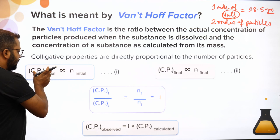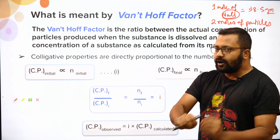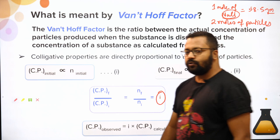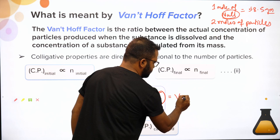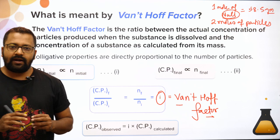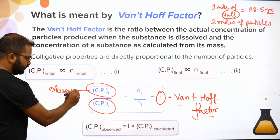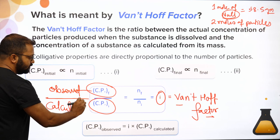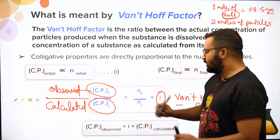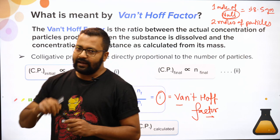Mathematically, the initial colligative property is proportional to the number of moles dissolved, and the final colligative property is the total number of moles actually present after dissociation or association. The ratio of these two gives us the term 'i', known as the Vant Hoff factor. Remember: i = observed / calculated, or experimental / theoretical. Final divided by initial is the Vant Hoff factor.